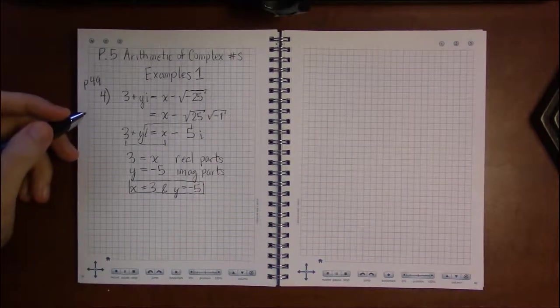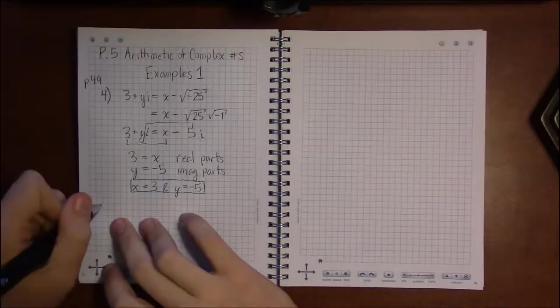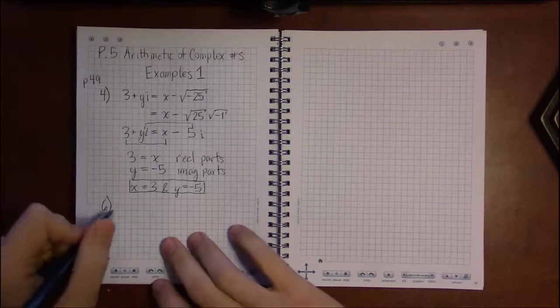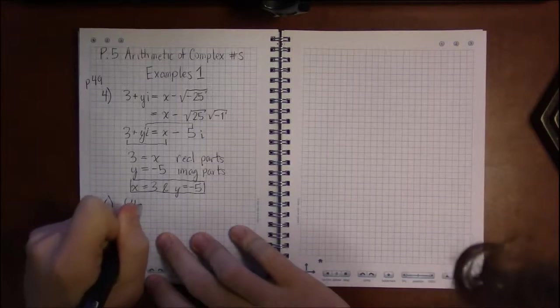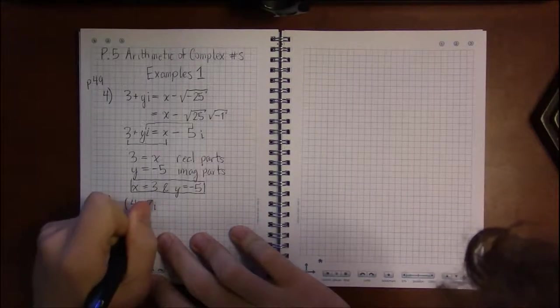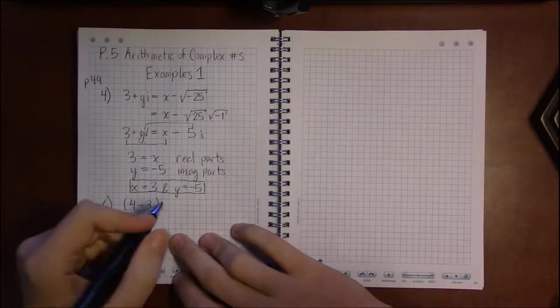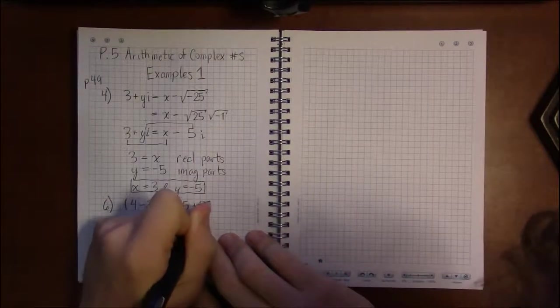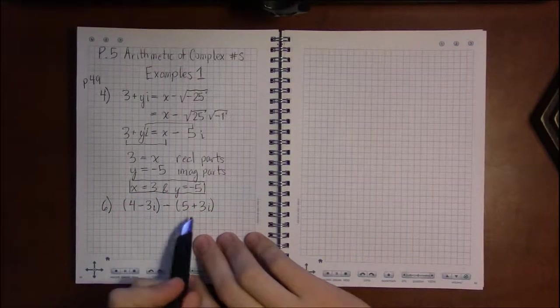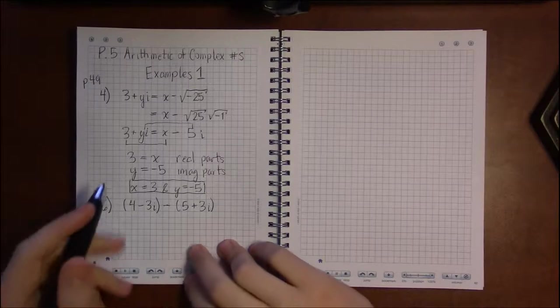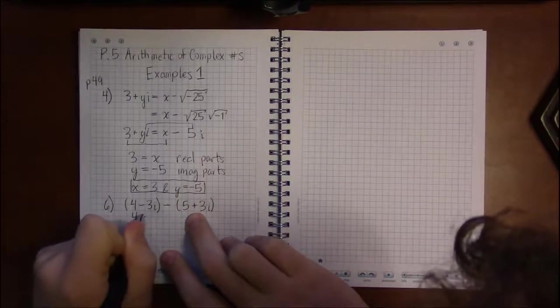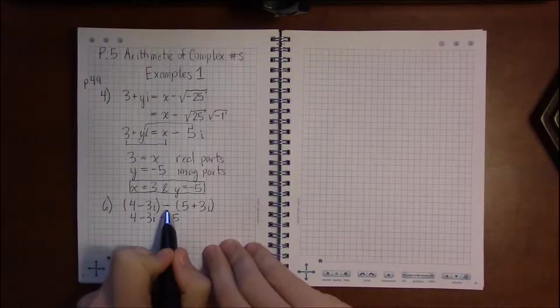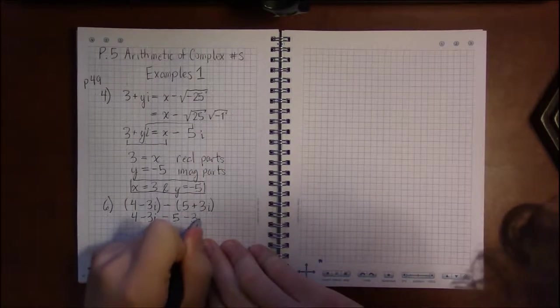Alright, now let's get back to some more basic arithmetic. So, six is taking the complex number 4 minus 3i and subtracting it away from the complex number 5 plus 3i. Well you can use the formula or do what I'm going to do, which is just distribute the negative. So we can drop all these parentheses. I'm going to get 4 minus 3i minus 5 minus 3i.